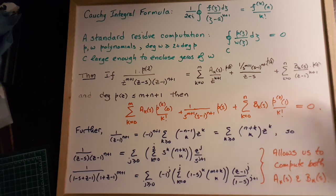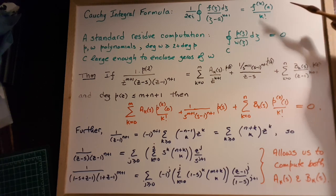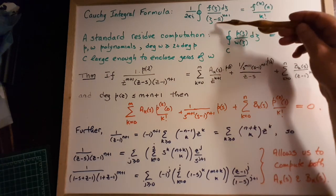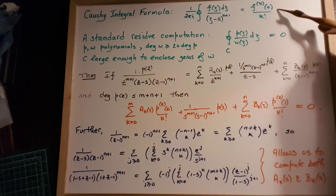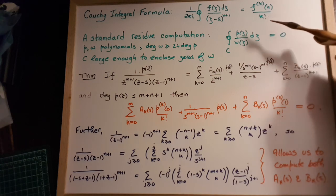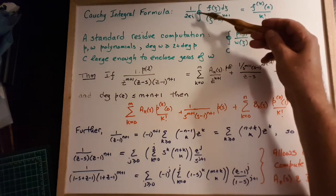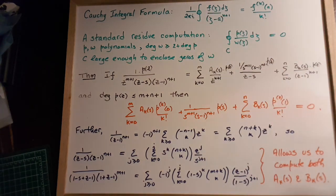We're going to use two facts from complex variables. We're going to use the Cauchy integral formula, which says that the integral of an analytic function divided by (zeta minus a) to the power of k plus 1 is the kth derivative evaluated at z equals a, divided by k factorial. That's provided that the contour you integrate over contains a in its interior.